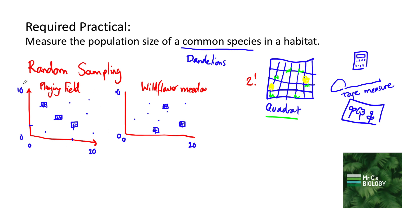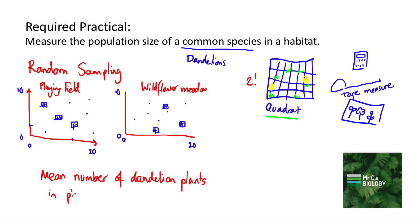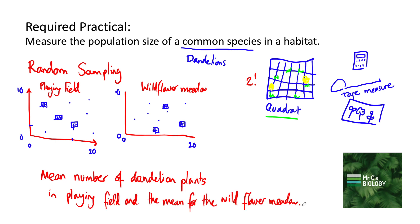Once we've done that for both the playing field and the wildflower meadow, we can then get a mean for each one. There's another video in the science skills section on how to calculate a mean. We'll get a mean number of dandelions in the playing field and we'll also get the same for the wildflower meadow. The important thing is that we can compare these two means, see which one has more dandelions, and see if that matches up to what we'd expect. That way we've randomly sampled two areas and compared the population size of a common species in each of those habitats.